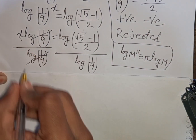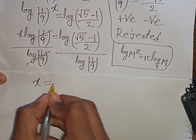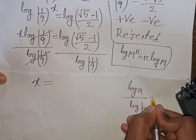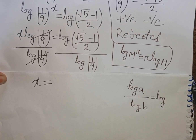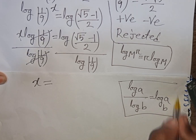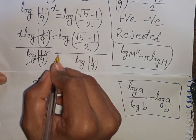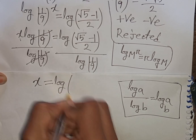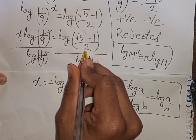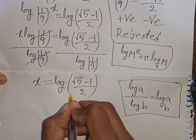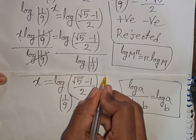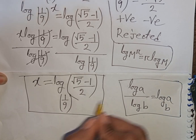So we divide both sides by log(1/9). Applying the formula log a divided by log b equals log base b of a, x equals log base (1/9) of [(square root of 5 minus 1) over 2]. This is the value of x and our final answer for this problem.